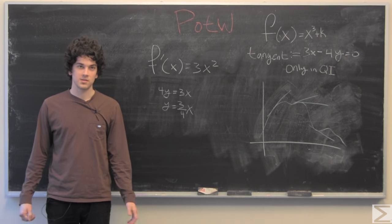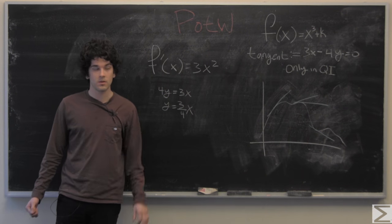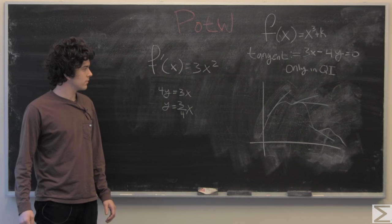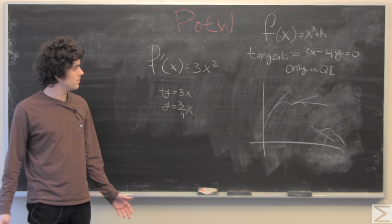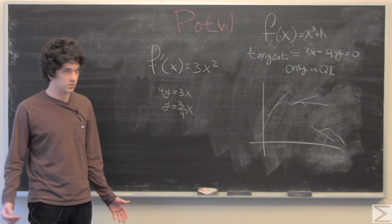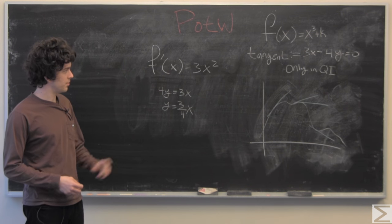What we're going to do now is set the slope equal to the instantaneous rate of change of the function. That will give us a point.